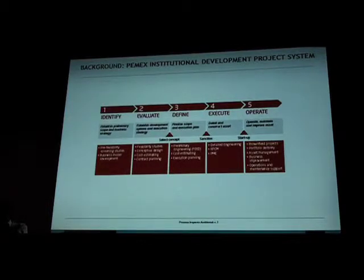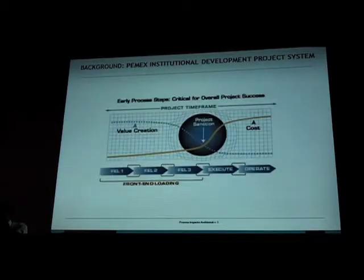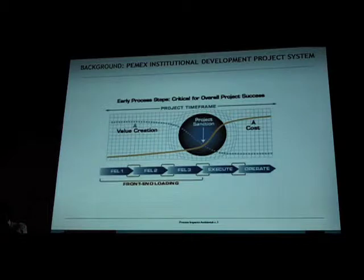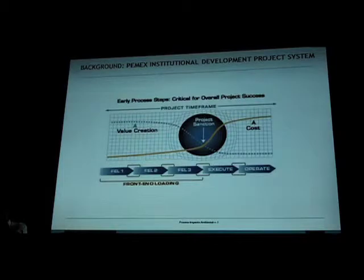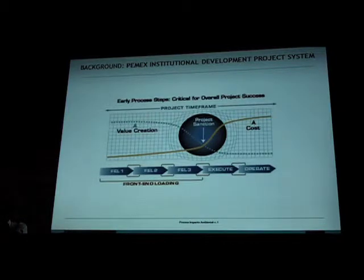The front-end loading process has different gates and triggering points for making a decision, continuing with the project, and improving upon it. The opportunities for value creation are at FEL one to FEL three — up front in the face of that project. That is where you can create the most value, and if there are any changes to a project, they will have the least amount of cost involved. Once the project is sanctioned, your opportunity for value creation will decrease, and any changes made to the project will have dramatically higher cost.